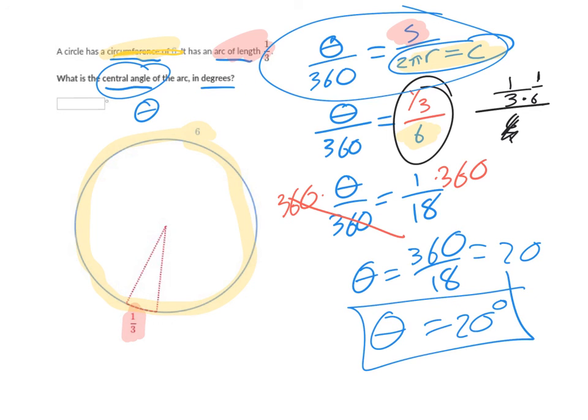Now if this was in radians, it'd be a little bit different. In radians, you remember the formula was where we did this thing, or you could think of the formula as theta equals s over r.